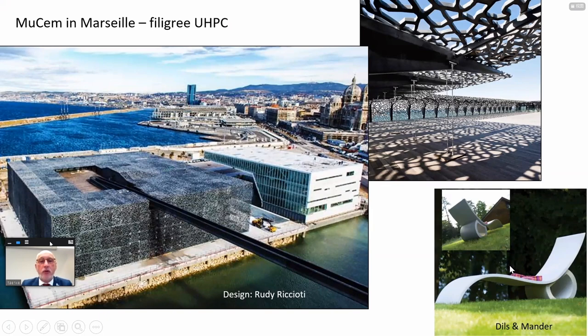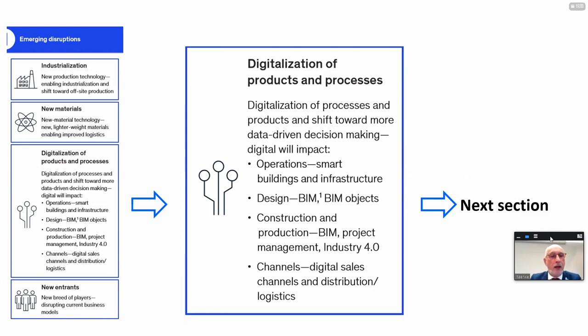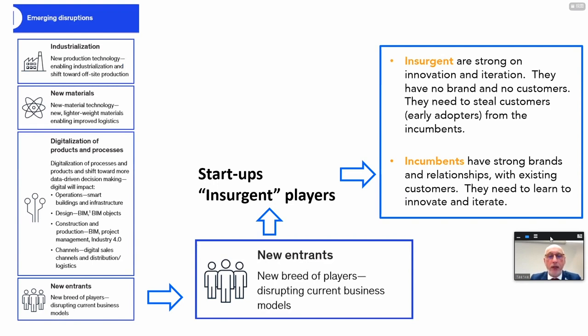The next disruption is digitalization of products and processes — I will talk about this in a separate section. Finally, here are indicated some new entrants: a new breed of players disrupting current business models — so-called startups or insurgent players. Insurgents are strong on innovation and iteration; they have no brand and no customers and need to steal customers from incumbents. The incumbents — the classical players — have strong brands and relationships with existing customers but need to learn to innovate and iterate.